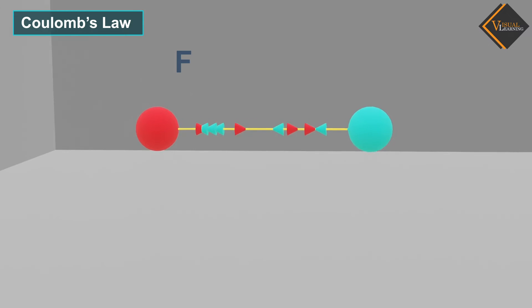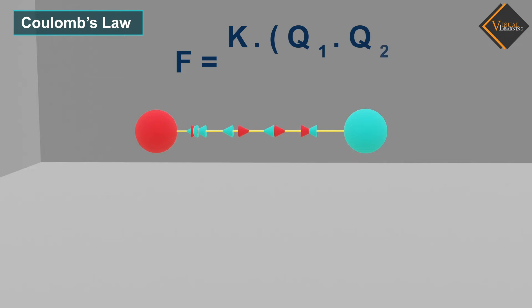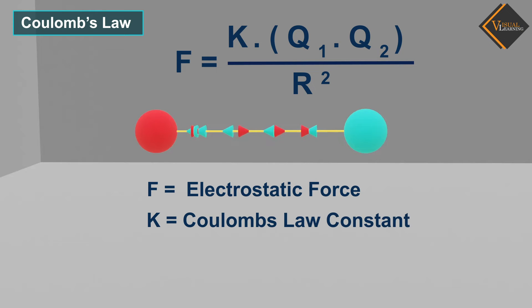This can be represented as a formula where F is the electrostatic force, C is Coulomb's Law constant, Q1 and Q2 are the charges, and R is the distance.